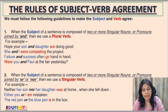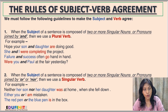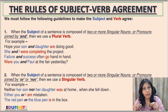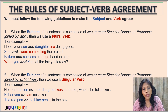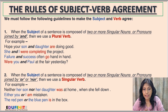Further examples of Rule 1: 'Failure and success often go hand in hand.' Failure and success are two abstract nouns joined by 'and', so we choose 'go' and not 'goes'. Also, 'Were you and Paul at the fair yesterday?' — 'You and Paul' are two subjects joined by 'and', so that's plural, and we use the plural verb 'were'.